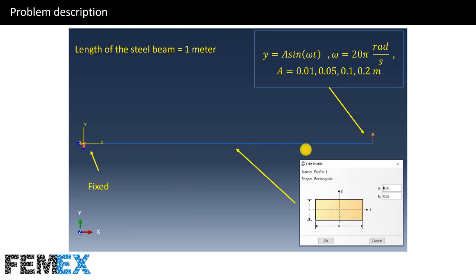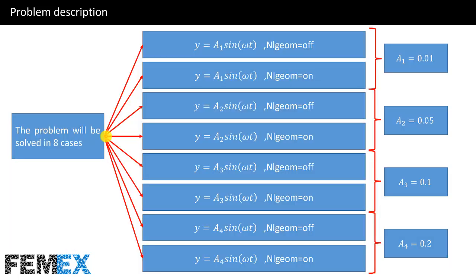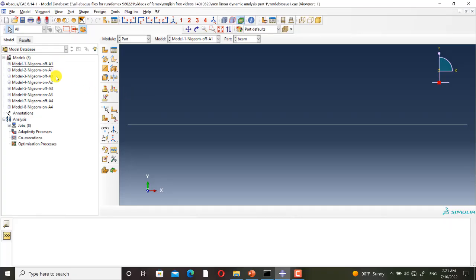The problem is a cantilever beam made of steel with a length of one meter. At the tip of the beam we have applied a sinusoidal displacement-control loading with a frequency of 20π radians per second. We have applied four different amplitudes. Overall, eight models have been defined and solved using the dynamic explicit step, with NLGEOM set to on in some and off in others.